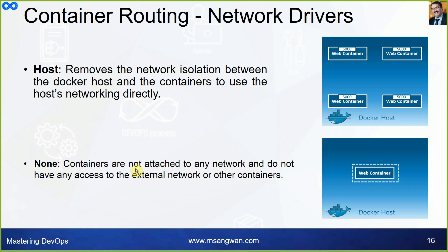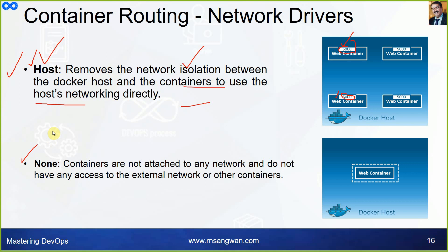If you use host networking, it removes the network isolation between the Docker host and the containers to use host networking directly. There is no isolation — you can directly use port 80 or 5000 without any bridge. This is also called host networking. None means you want isolated, no networking. Those are the first three drivers: bridge, host, and none.